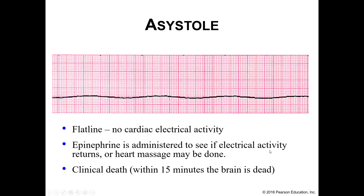There are instances where EKGs can quickly help us determine what's going wrong in the heart. The first is asystole — basically a flatline with no cardiac electrical activity. If your heart is not electrically active, it's not really beating, and you're not able to stay alive. Within about 15 minutes, if we can't get your heart going, brain death occurs. If we end up with asystole, we'll give epinephrine to try to jumpstart it, or if on an operating table, perform a heart massage.